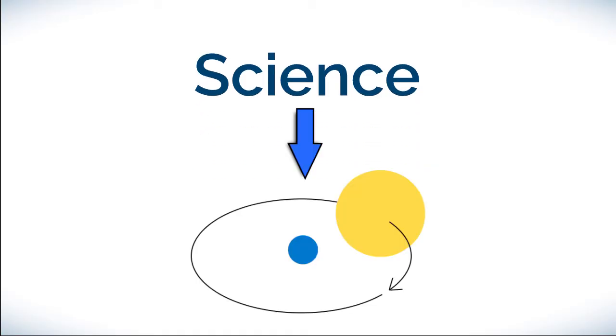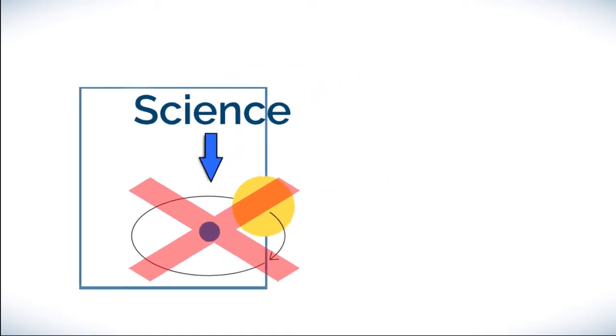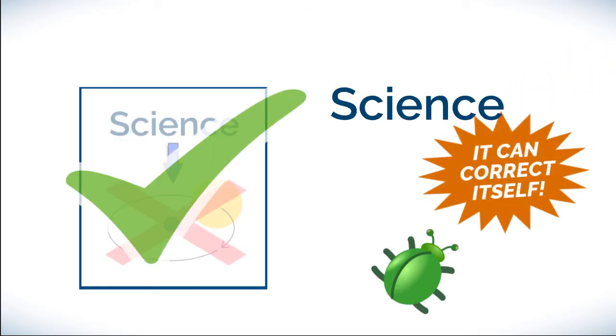Science proving its previous findings wrong is a sign of science working as it should. It's a feature, not a bug.